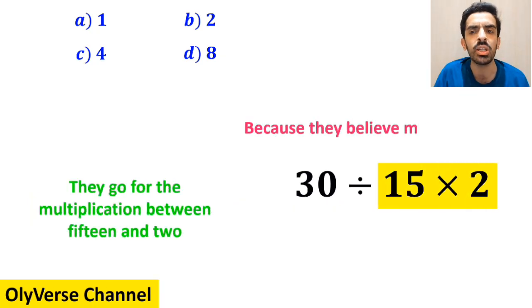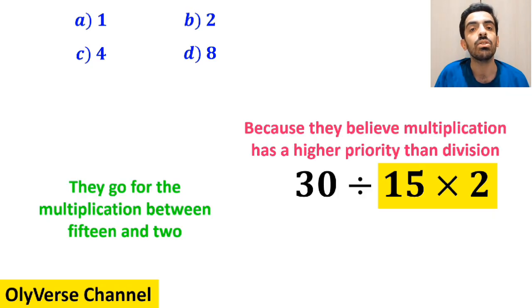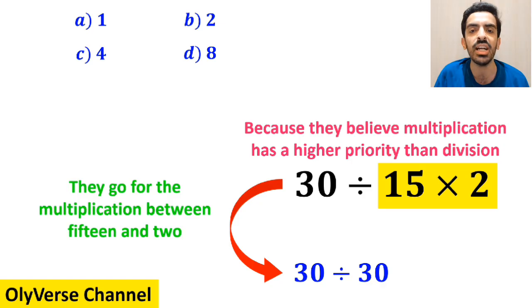because they believe multiplication has a higher priority than division. So, they simplify this expression and rewrite it as 30 divided by 30, which finally gives them the answer 1.